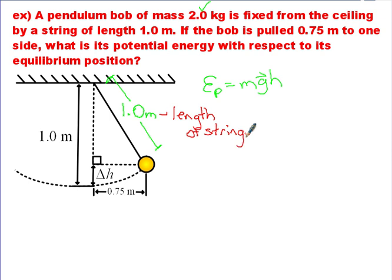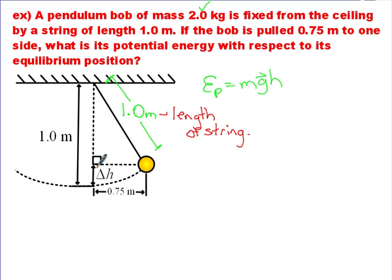Let's go through and figure it out. We need to know the height. We know the distance from equilibrium to the ceiling is 1 meter. What we really want is the y-component of the triangle. We know the x-component is 0.75 meters, and we know the hypotenuse. So let's find this y-component. Since we don't have any angles, we'll use the Pythagorean formula rather than a trig ratio.